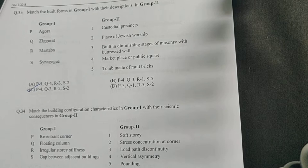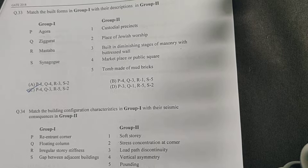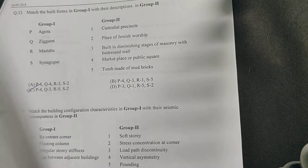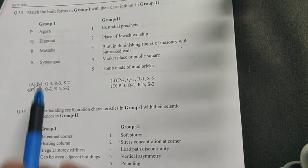Next is mastaba. Mastaba was the earlier tomb in Egyptian architecture before pyramids. Mastaba was used for an Egyptian tomb. Next is synagogue. Synagogue is basically a place for Jewish worship.